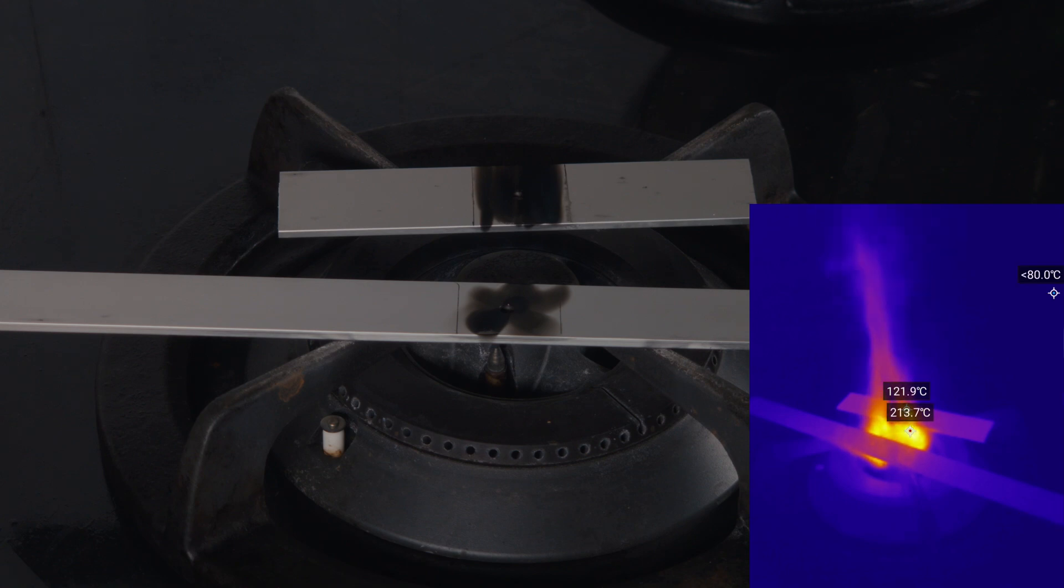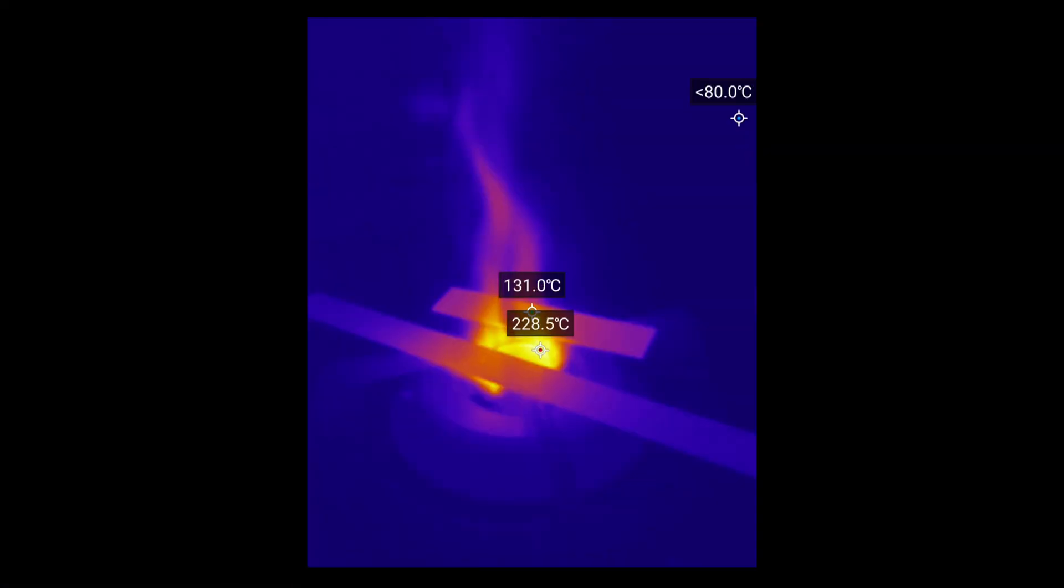I put soot from candles onto the bars as a low-tech temperature sensor. I've also got the high-tech temperature sensor. I lost the footage of the soot burning off but at least I've got the thermal camera footage. We're aiming for 400 degrees celsius or so which will take a while.